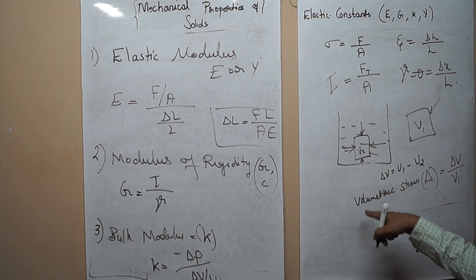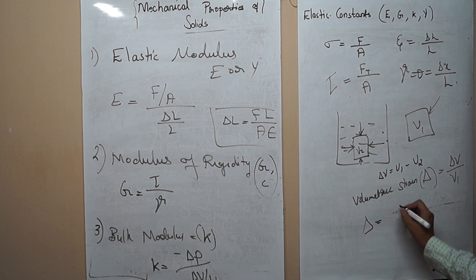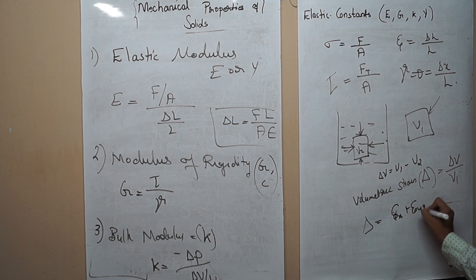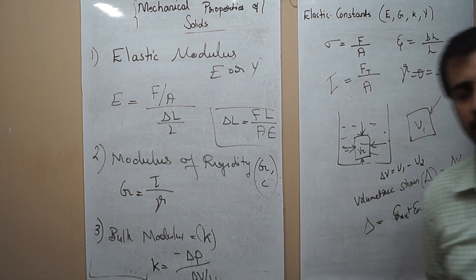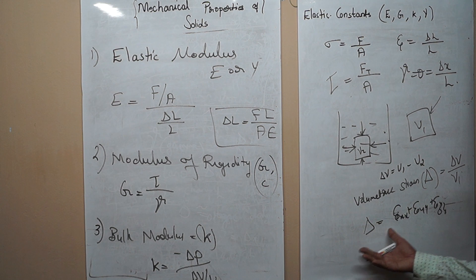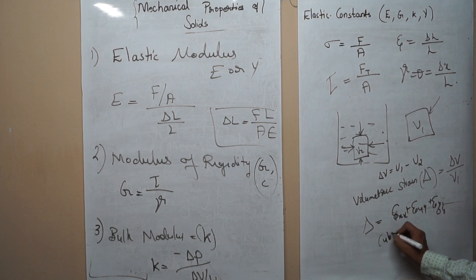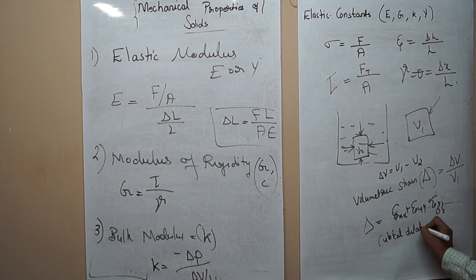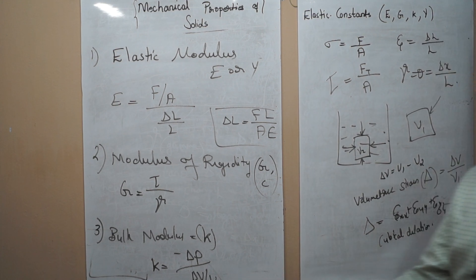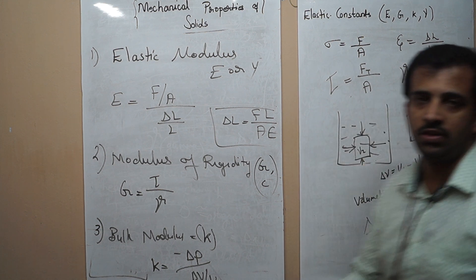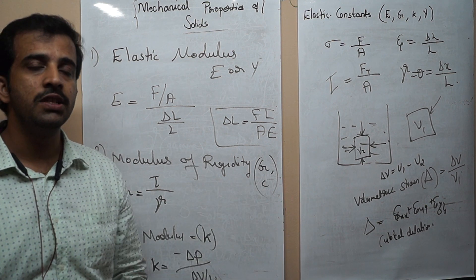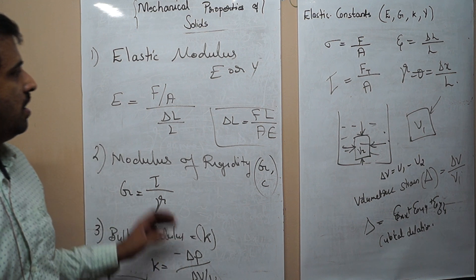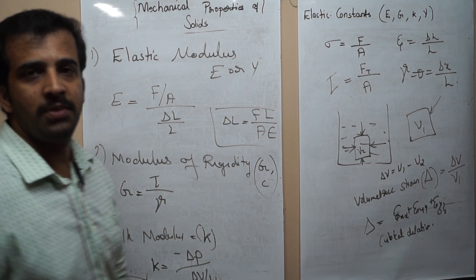One more important concept: the volumetric strain delta equals epsilon XX plus epsilon YY plus epsilon ZZ, which is the sum of the normal strains in all three directions — also known as cubical dilation, same as delta V divided by V. These are the basic concepts in strength of materials. In the next section, we will deal with a uniaxial tension test on mild steel. Thank you.